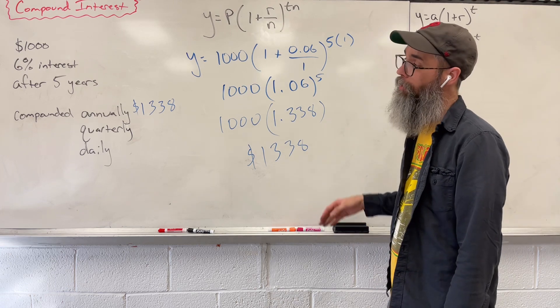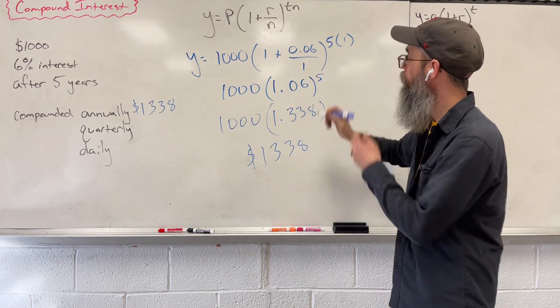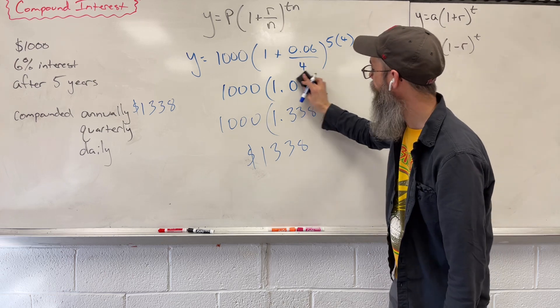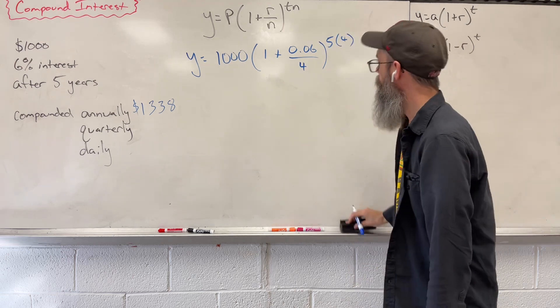What would happen if we now compound this quarterly? So instead of this N being a 1, what if we change it to a 4? How does that change things?